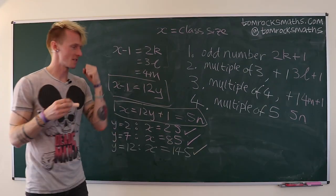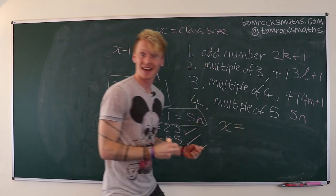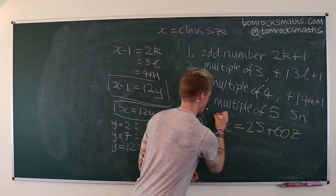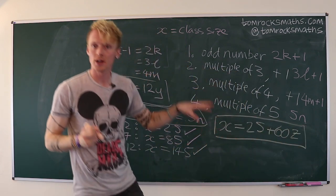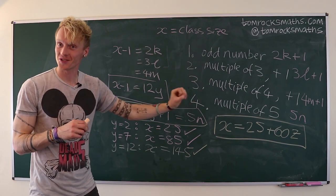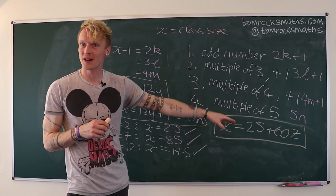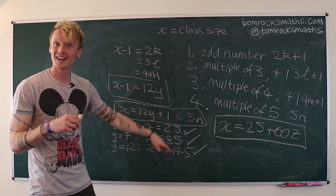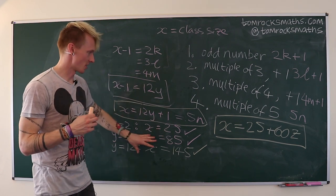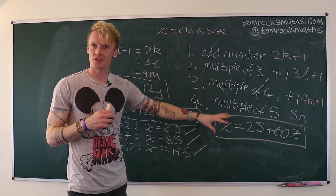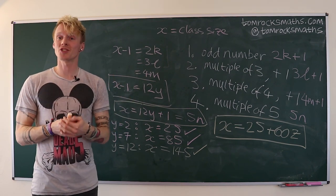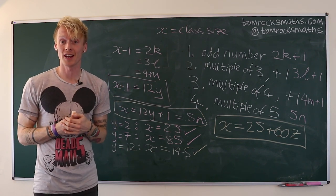So overall, the final formula giving all possible solutions to the class size problem is twenty-five plus sixty times z, where z is a non-negative whole number. Z equals zero gives our original solution: Ada's class size equals twenty-five. But we can continue adding multiples of sixty — with z going zero, one, two, three, four, on and on forever — to generate an infinite set of solutions. Thank you very much for watching. Please do enjoy the rest of Maths Week and remember to subscribe to my channel for more maths fun.